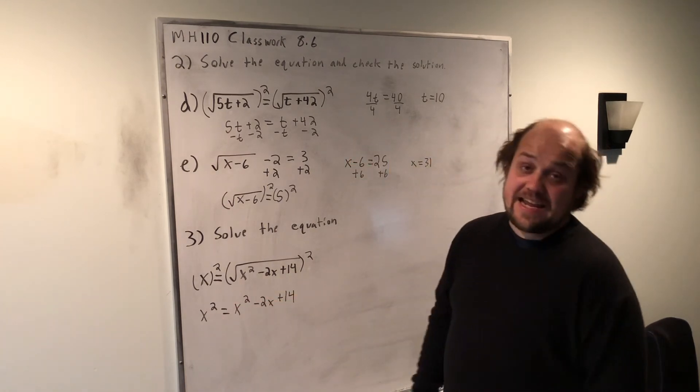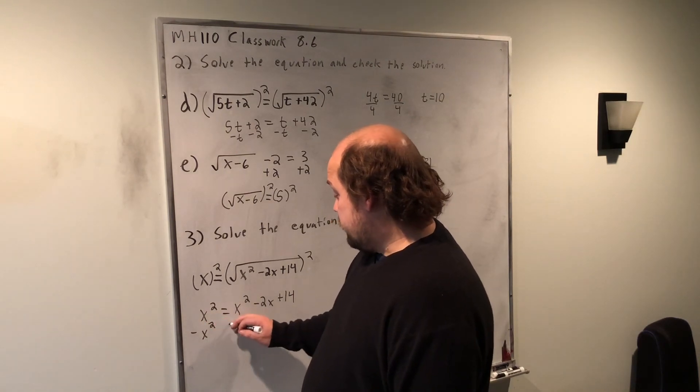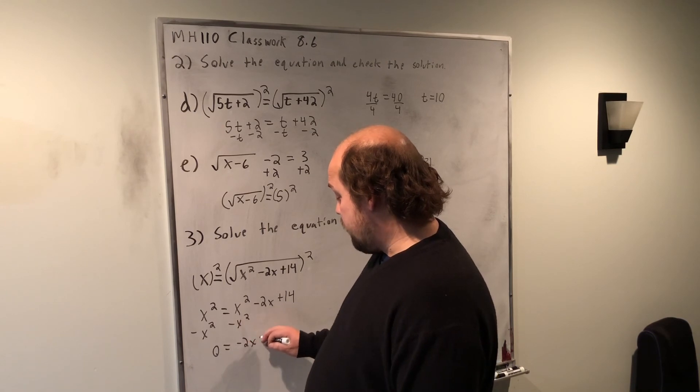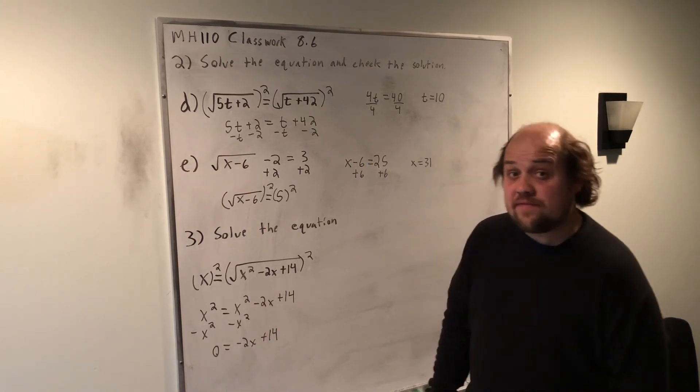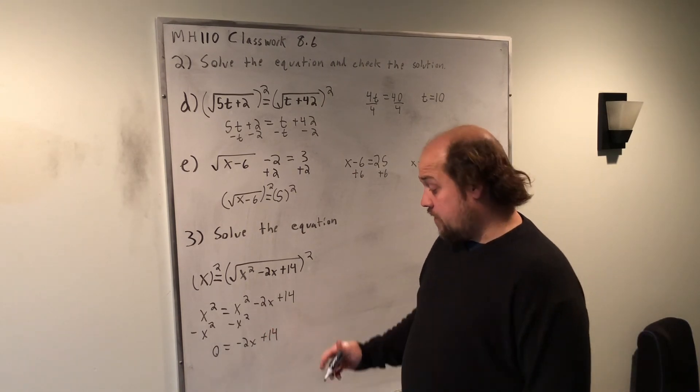If I try and take everything to the right, I'd subtract x squared, subtract x squared, and both x squareds would drop out of the problem. At this stage, since I only have the single power of x in the problem, I want to take letters to one side, leave numbers on the other.